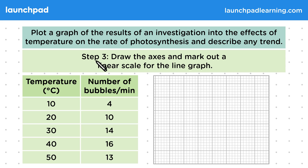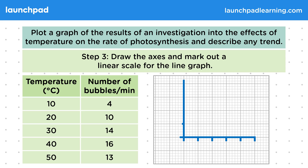Step three: draw the axes and mark out a linear scale for the line graph. A linear scale just means marking off at regular intervals. Marking off at every bold line within the graph paper is generally a good idea.